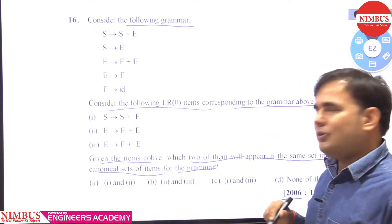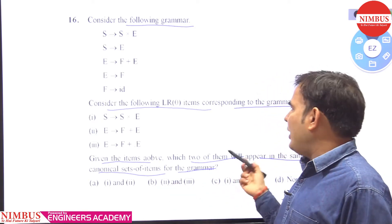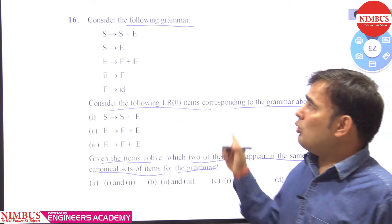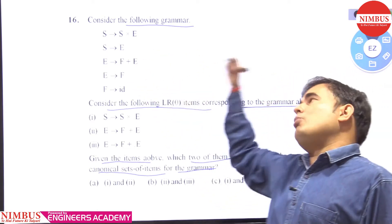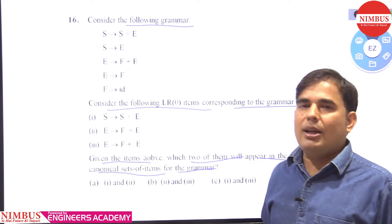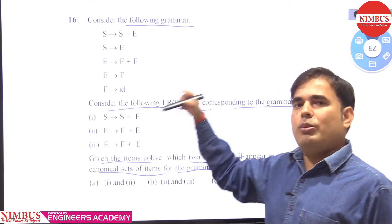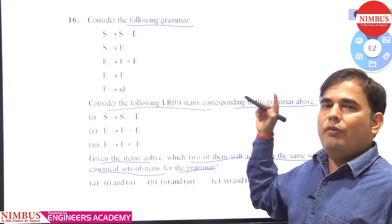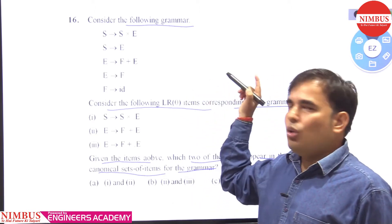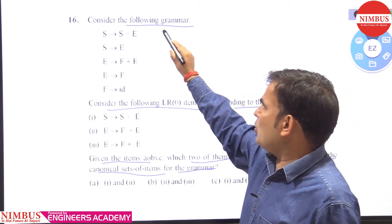To find out the canonical set of items or LR0 items, first we need to convert the given grammar into augmented grammar. We need to add a production S' → S.